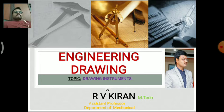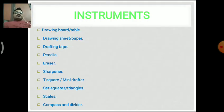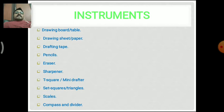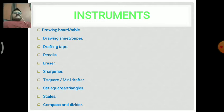The drawing instruments used in engineering drawing are: drawing board or table, drawing sheet or paper, drafting tape, pins, clips, pencils, erasers, sharpener, T-square or mini drafter, set squares or triangles, scale, compass, and divider. Now let us describe each and every one of these drawing instruments.